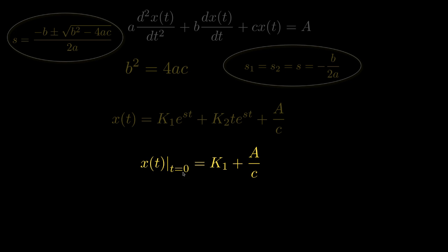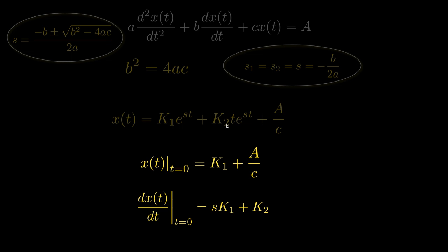If we specify x of t at t equals 0 as one initial condition, then x of 0 will be k1 plus a over c. Since a and c are known, this initial condition is enough to determine k1, but we'll need another initial condition to determine k2. We typically specify the initial condition for the derivative. Evaluating the derivative at t equals 0 gives s k1 plus k2, and since we know k1, this allows us to solve for k2. So the two initial conditions provide two equations in the two unknowns k1 and k2.